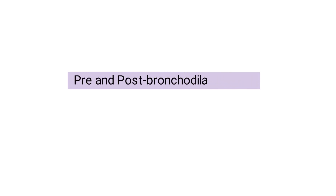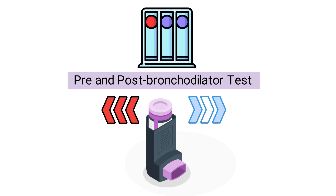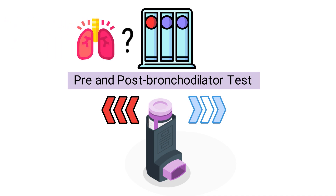A pre and post bronchodilator test involves administering a bronchodilator before and after spirometry is performed. The results of the test help show how the patient's lungs respond to the medication. By comparing the pre and post results, we can determine if the medication has effectively improved the patient's lung function, which tells us a lot about their condition.